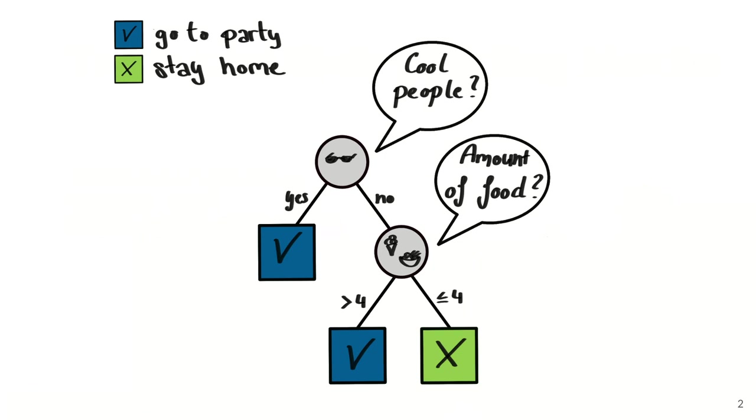So let's say you want to decide if you go to a party. You can use a decision tree for that. So let's say you go to parties if there are cool and nice people.